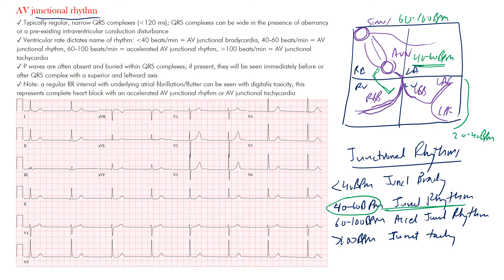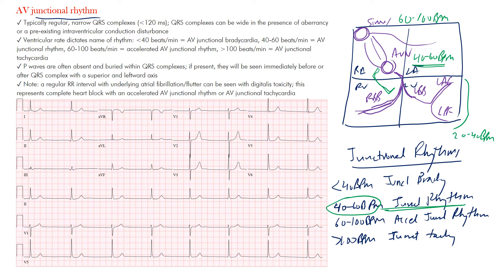A junctional rhythm typically has a regular, narrow QRS complex less than 120 milliseconds — that's less than three small boxes on the EKG. The QRS width is measured from beginning to end. It could be wider if there is aberrant conduction or a pre-existing intraventricular conduction delay affecting the lower pathway.